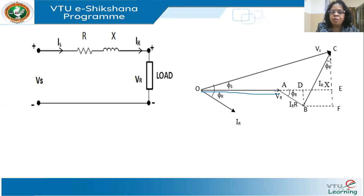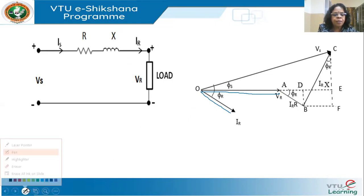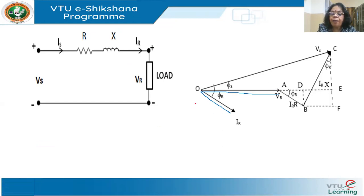Remember that most loads are inductive in nature — motors and lighting loads are all inductive. Heating loads such as geysers and furnaces are resistive in nature. Assuming an inductive reactive load, the next step is to draw the phasor IR at an angle phi R, which is determined by the power factor of the load. So you draw VR and IR.